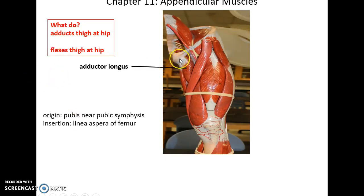Moving on, we have the adductor longus muscle. Its origin is the pubis near the pubic symphysis. It inserts into the linea aspera of the femur. It helps to adduct the thigh at the hip and also helps a little to flex the thigh at the hip.